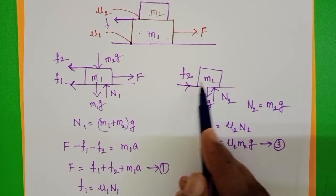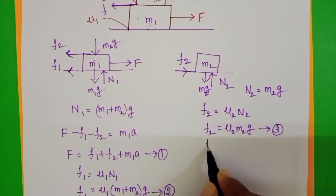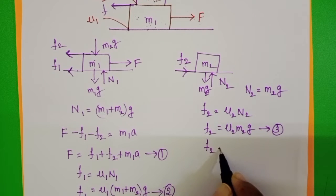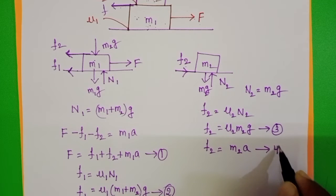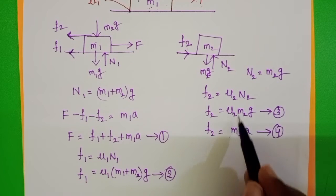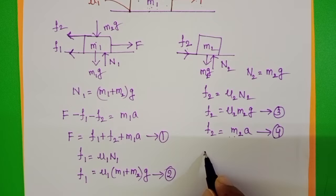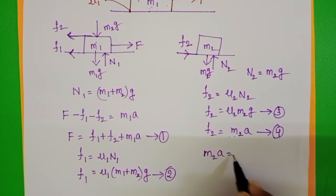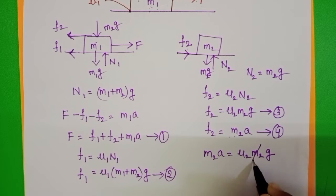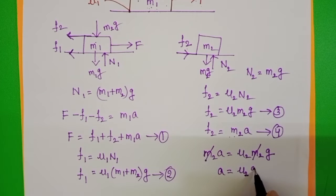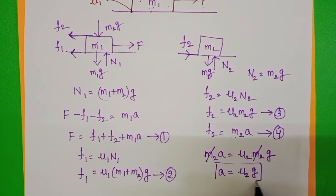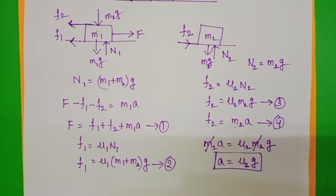Due to this force, m2 is accelerated in the forward direction. f2 equals m2*a. Take this as equation 4. Equating these two equations: m2*a equals mu2*m2*g. On both sides m2 gets cancelled, so the relative acceleration of the two blocks equals mu2*g.